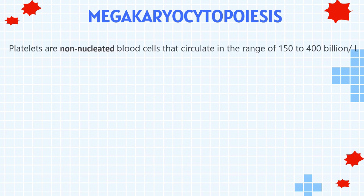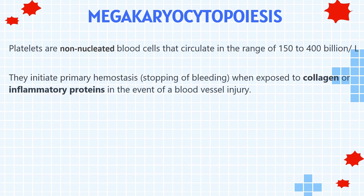Platelets are non-nucleated blood cells that circulate in the range of 150 to 400 billion per liter, with slightly higher average counts in women and slightly lower in both sexes over 65 years old. They initiate primary hemostasis — stopping of bleeding — when exposed to collagen or inflammatory proteins in the event of a blood vessel injury.